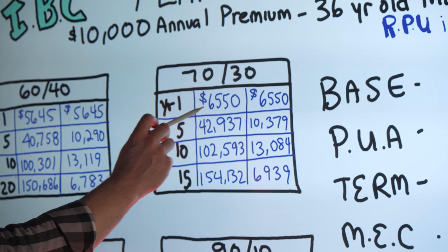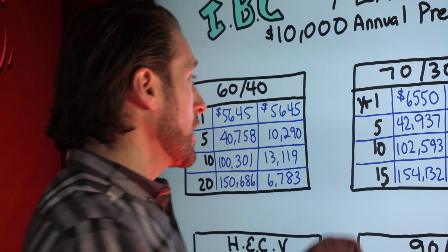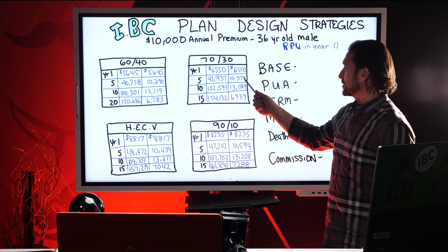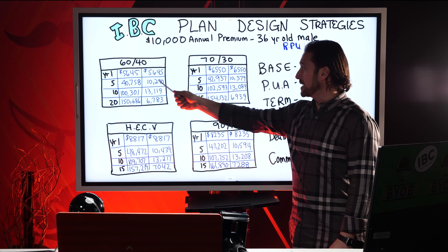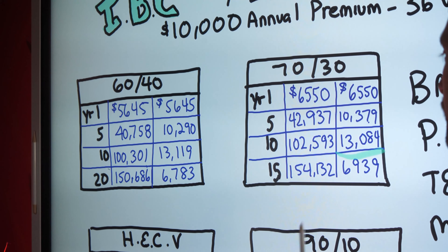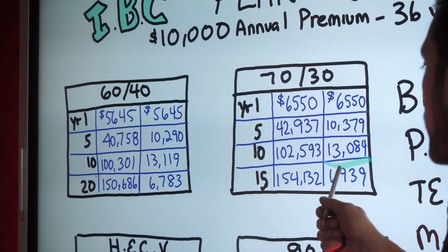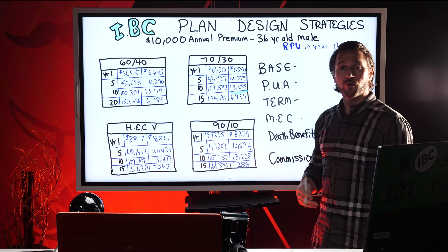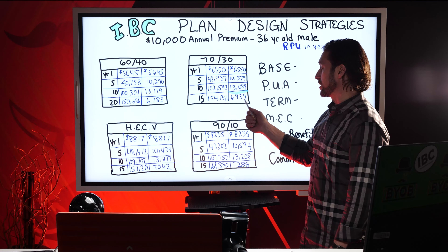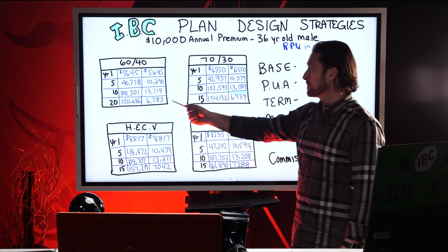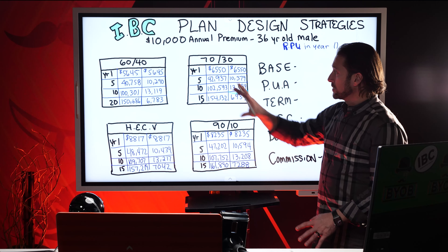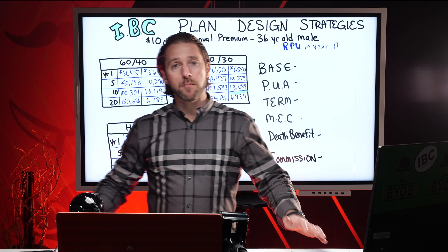The 70-30, as you can see, gives a little more in the beginning — not $5,645 like the 60-40, but $6,550. In the fifth year we have $42,000 versus $40,000, and $10,379 versus $10,290 in year-over-year growth. In the 10th year: $102,000 versus $100,000, and $13,119 versus $13,119. But in the 10th year, because of the cost of the term rider, the 70-30 loses some efficiency in year-over-year growth. In the 20th year: $154,000 versus $150,000. Once the term insurance drops off, the plan becomes more efficient.